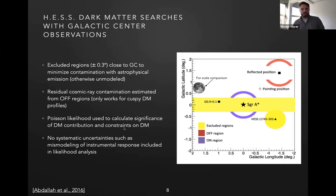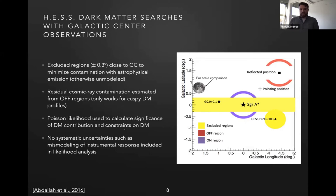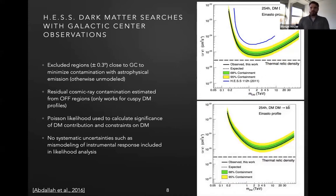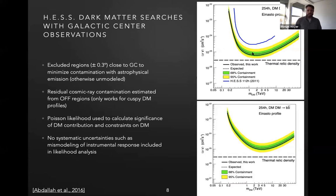They found no dark matter signal, so they used the same methodology to derive constraints on the annihilation cross-section. I would like to note that they did not include any systematic uncertainties connected to the instrumental response function in their likelihood analysis — this will become relevant later. The limits they derived for annihilation into W boson pairs or b-bbar are still a few factors away from the thermal relic cross-section, but are already very constraining.